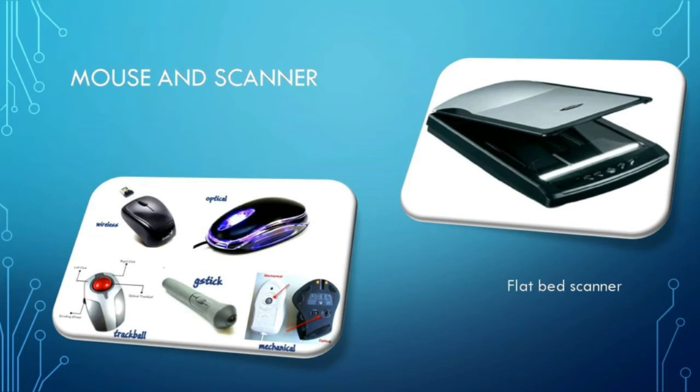Next we are going to see the mouse and the scanner. A mouse is an input device. When we click on the button, the mouse sends information to the computer. It is an alternative way to interact with the computer besides a keyboard. When the user moves the mouse, the mouse pointer also moves on the screen. The different types of mice are scroll mouse, optical mouse, wireless mouse, etc. Scanner is an input device that is used to read or scan images or text and convert them to digital form. It creates an electronic version of the document that can be viewed and edited on the computer.